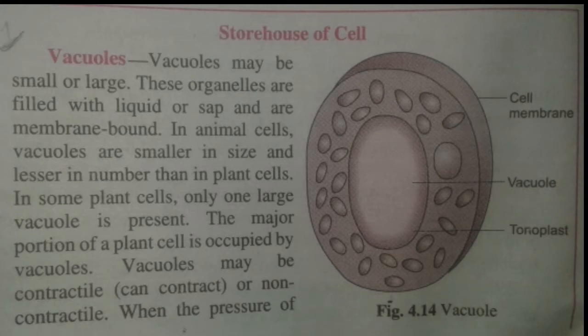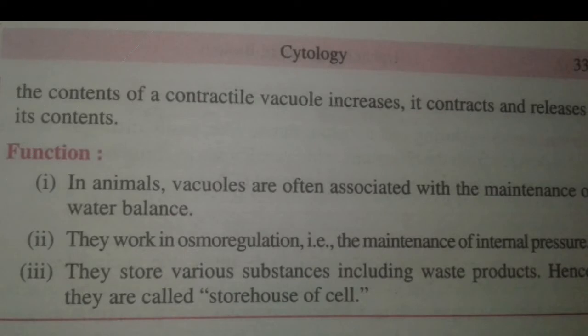Hello students, hope you all are fine. We are together here once again for studying topics related to cell organelles. Today's topic is cell vacuoles. We have already seen the diagram of the cell in previous videos. In plant cells, vacuoles are large in size but less in number, whereas in animal cells they are more in number and very small in size.